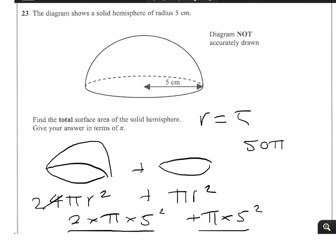So 50 pi plus 25 pi gives you a nice neat answer of 75 pi.